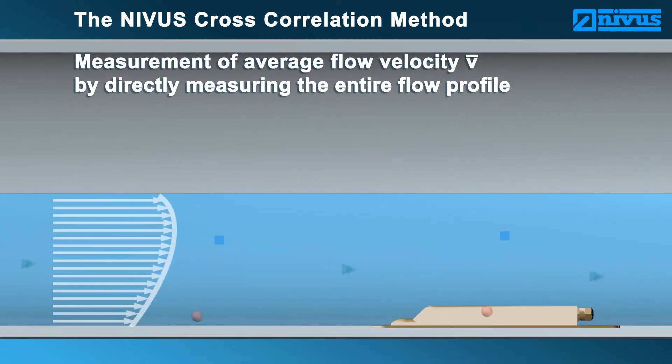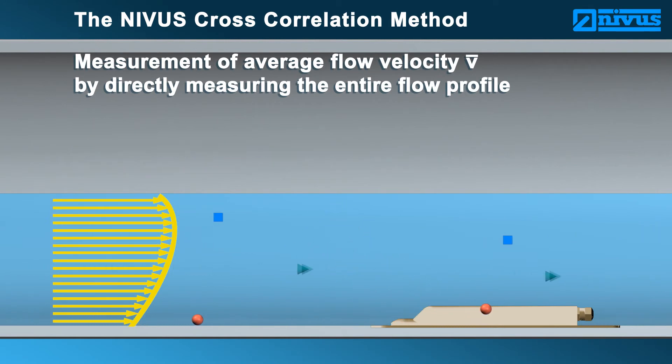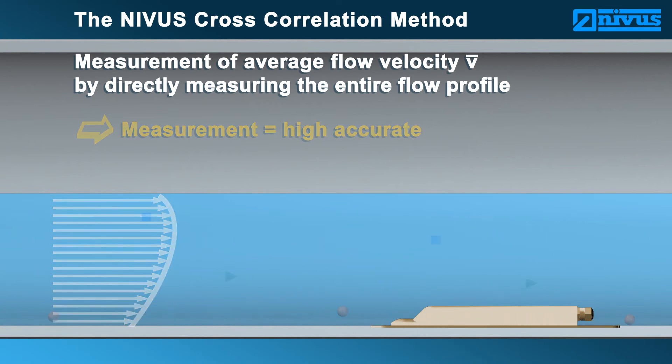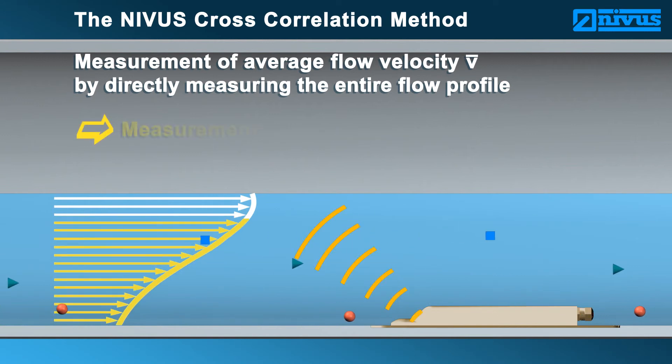The discrete flow velocities related to the flow level covering the complete measuring beam ensures highly accurate flow metering. The sensor even detects flow profile changes due to events such as rainfall. The measurement remains highly accurate.